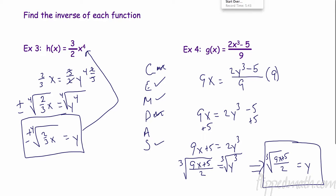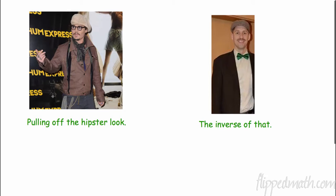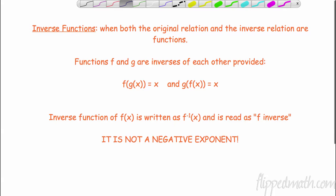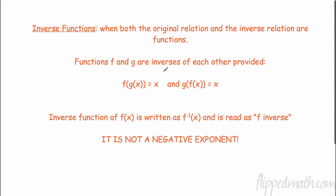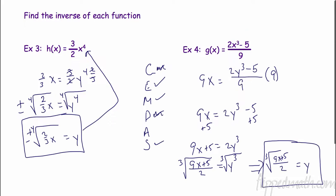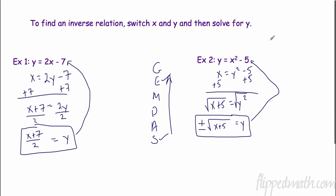Pulling off the hipster look — Johnny Depp does it well. The inverse of that? Mr. Bean. Now, inverse functions: inverse functions occur when both the original relation and the inverse relation are functions. Not every inverse is going to be a function. Remember, a function means for every input there is exactly one output, and we check that with the vertical line test — if it touches twice, it's not a function.